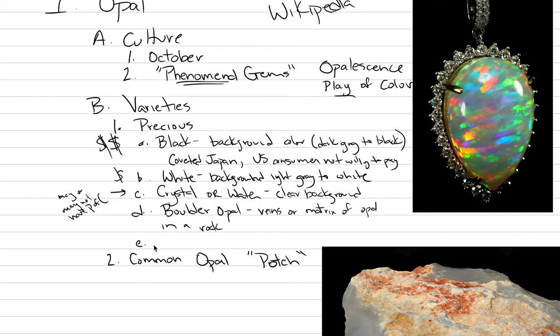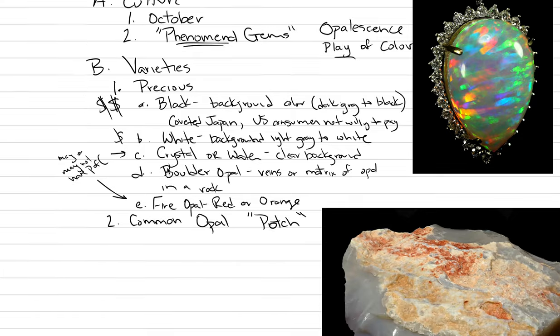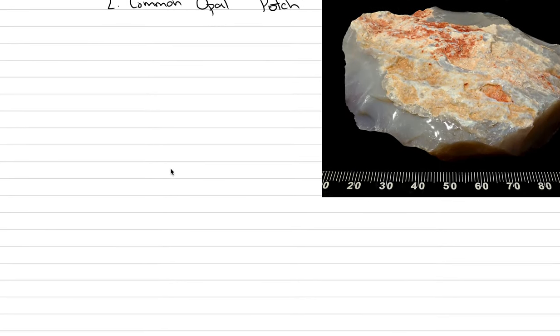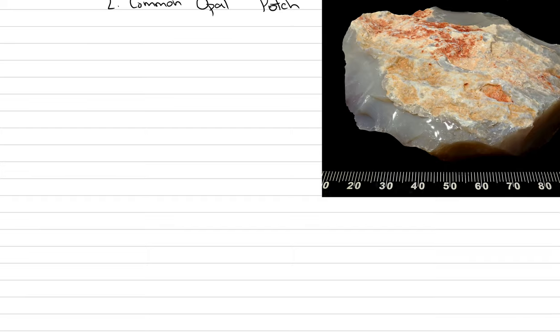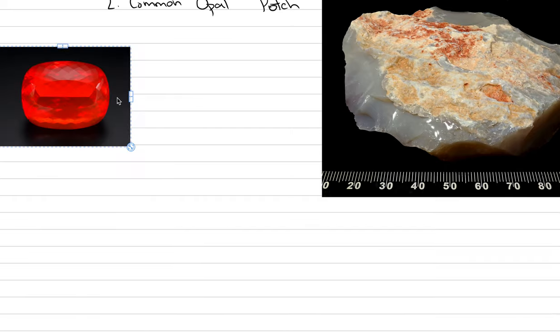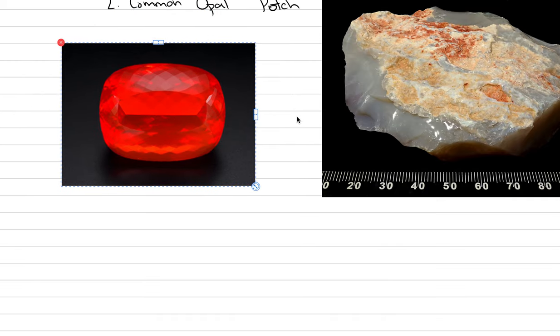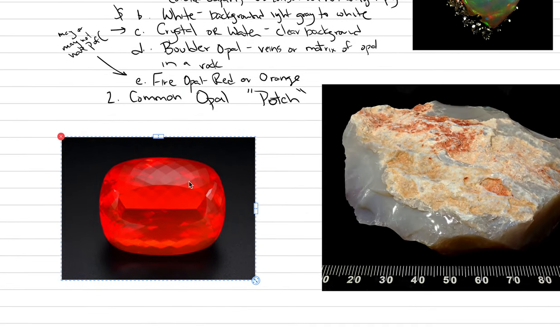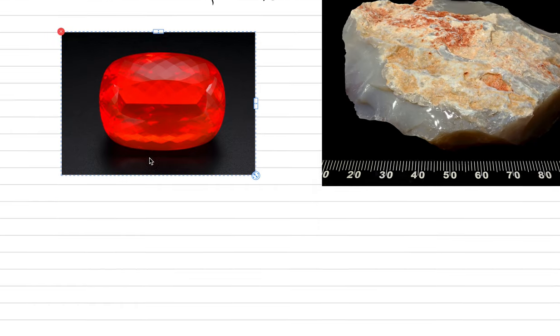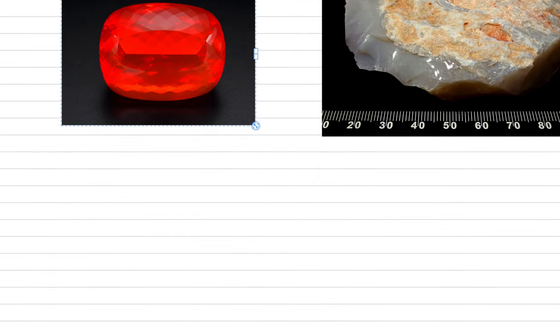And then the last type of precious opal is called fire opal. What fire opal has is it is a red or orange stone, and it also may or may not have play of color. So those are our different varieties of opal. Here's a picture of fire opal, highest-end fire opal from GIA. When it's this color red, it's called cherry opal. Notice there is no play of color here, but it is a stunning shade.